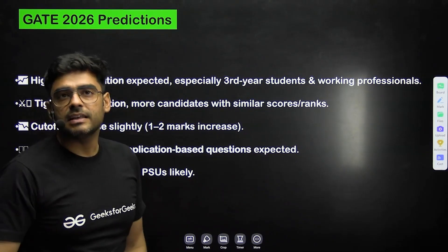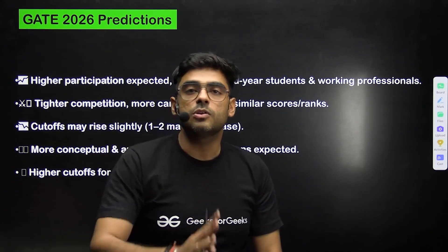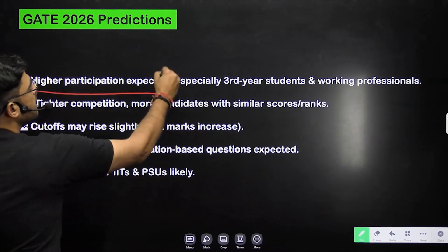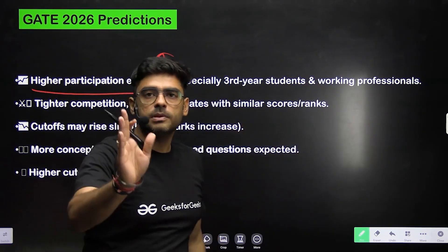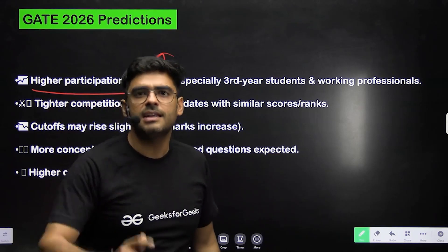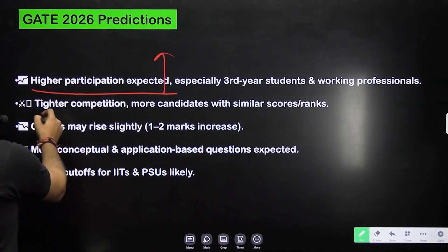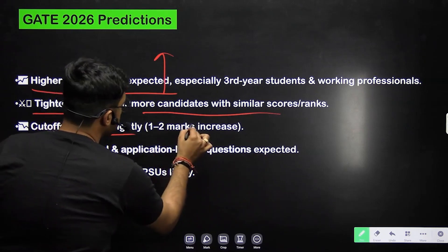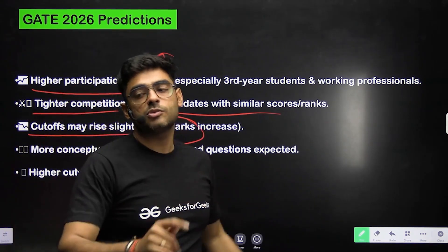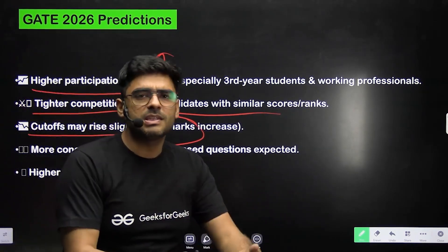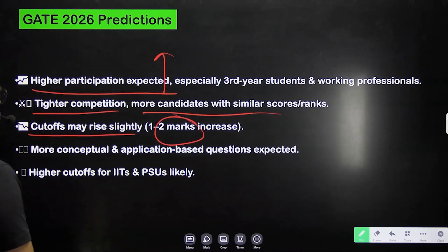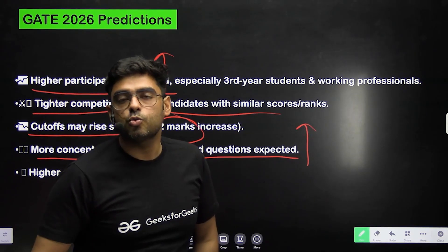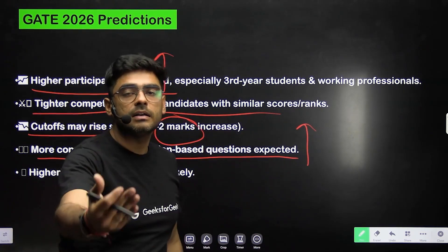For GATE 2026 predictions: higher participation is expected, especially among third-year students and working professionals — last year 1,70,000 sat, this year close to 2 lakh would be sitting. Competition is getting tighter and more candidates with similar scores and ranks will be there. Cutoffs may increase — I expect around two marks increment for CS, and similarly for DA and other branches. More conceptual and application-based questions are expected, so there will be no rote learning — students clear on concepts will have a better chance.